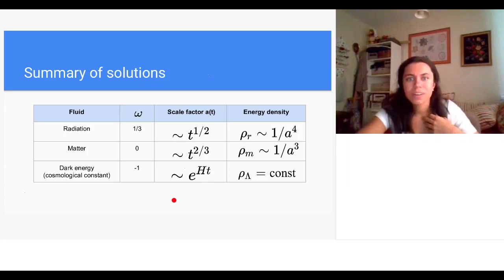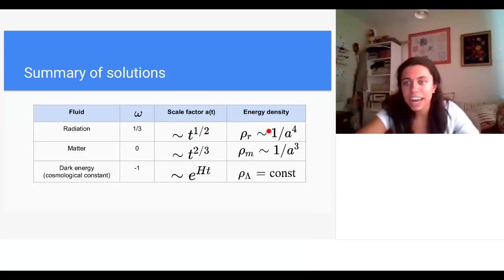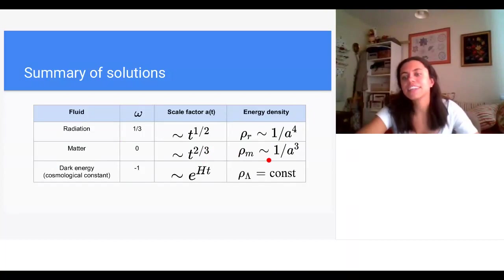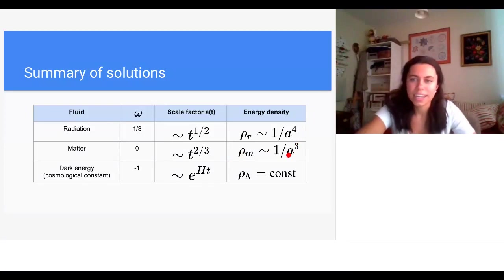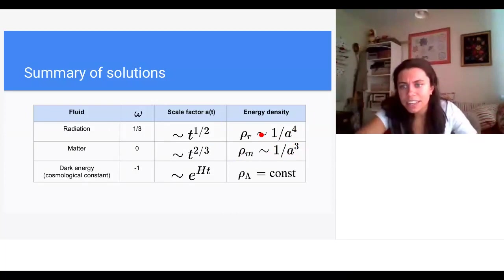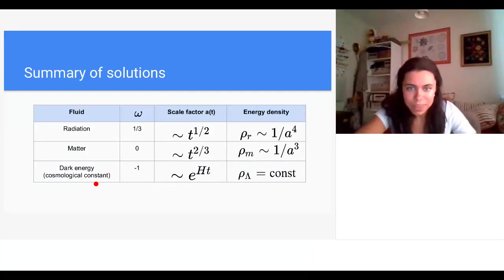Summary of important solutions: radiation gives scale factor growing as the square root of time with energy density going as one over a⁴; non-relativistic matter gives a growing as t^(2/3) with energy density as one over a³ (just conservation of energy since volume goes as a³); and the extra factor of one over a for radiation comes from cosmological redshift. Dark energy gives exponential growth of the scale factor with constant energy density.